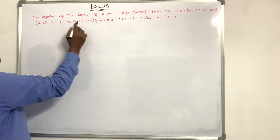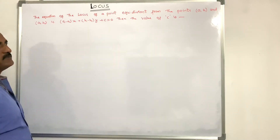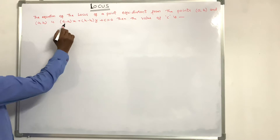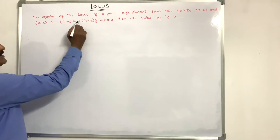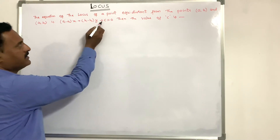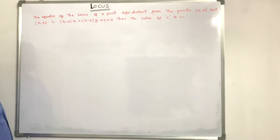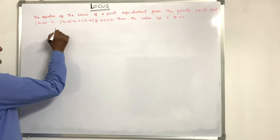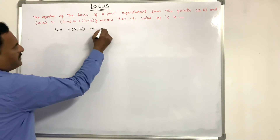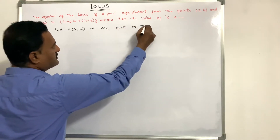The equation of the locus of a point which is equidistant from the points (a1, b1) and (a2, b2) is: (a1 minus a2) into x plus (b1 minus b2) into y plus c is equal to 0. Find the value of c. Let P(x1, y1) be any point on the locus.